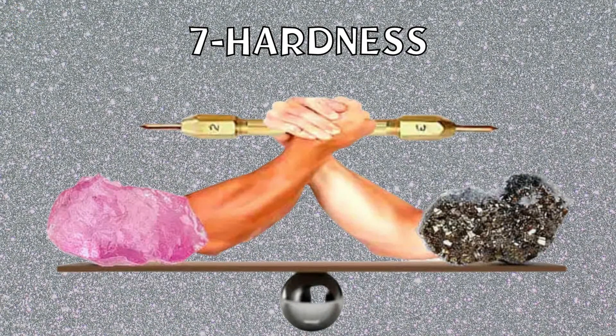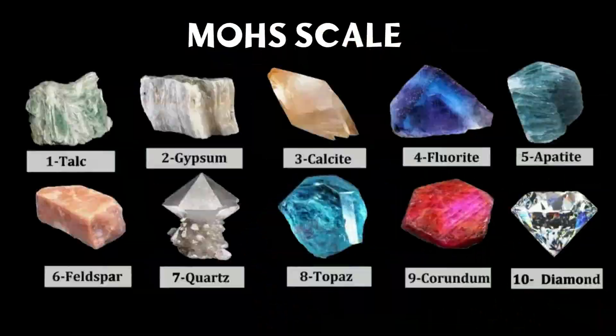Hardness: the Mohs hardness scale is used to rank the hardness of minerals, from 1 being the softest to 10 being the hardest. A mineral can scratch any mineral softer than itself.